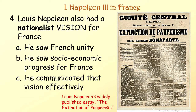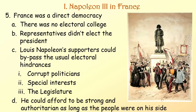Louis-Napoleon also had a nationalist vision for France — French unity and socioeconomic progress — and he communicated that vision effectively. For example, he wrote a widely published essay called The Extinction of Pauperism. France was also a direct democracy with no electoral college; the people elected the president directly. So Louis-Napoleon's supporters could bypass the usual electoral hindrances such as corrupt politicians, special interests, and the legislature. This meant he could afford to be strong and authoritarian as long as the people were on his side.